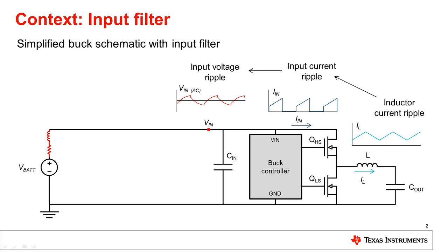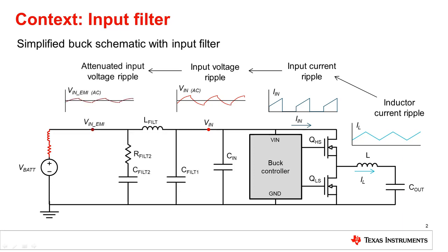We can do this by adding capacitance on the input like CN. To further filter the ripple we can place an inductor in series with the supply and add more capacitance. This is called a passive EMI filter. The resistor is there to dampen any resonance with the capacitors and the inductor, but this can come from the ESR of a bulk capacitor or other combinations of capacitors and resistors. This is the typical approach for most automotive and industrial systems which need to meet certain EMI specifications. The good news is that if the EMI test fails you can just add more inductance or more capacitance to further reduce the EMI.